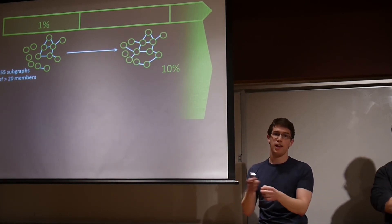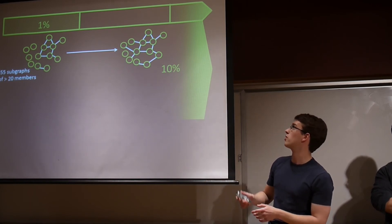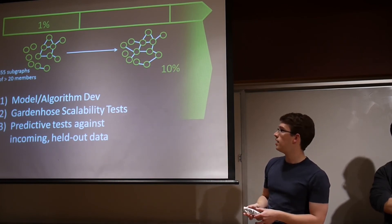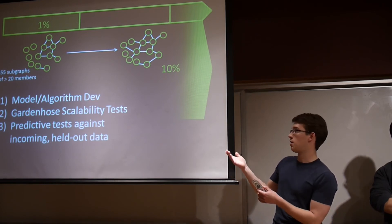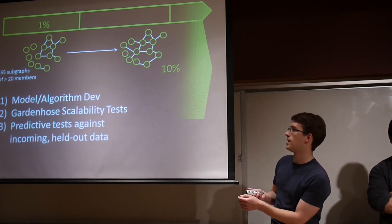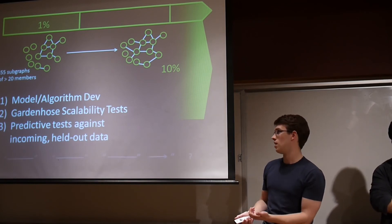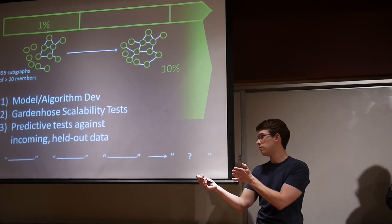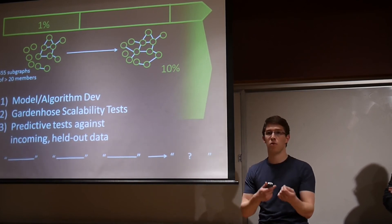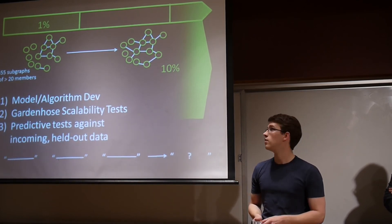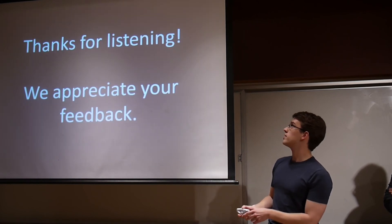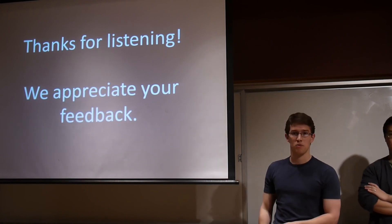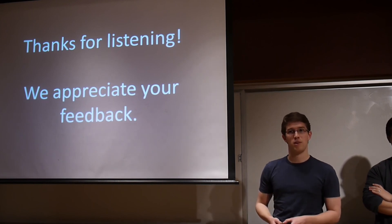Hopefully over time this graph will get a little more dense and we'll be able to draw better conclusions. Our rough basic steps are: model and algorithm development in the near future on the one percent of data, testing scalability using the garden hose, scaling up to garden hose level, and then doing predictive tests against incoming data. If these are a series of tweets in the past and I'm trying to predict what people are talking about in the future, looking at differences in the distribution of words is the key metric. There are a bunch of metrics people have used to evaluate that. Any feedback you guys have for us would be appreciated. Thanks.